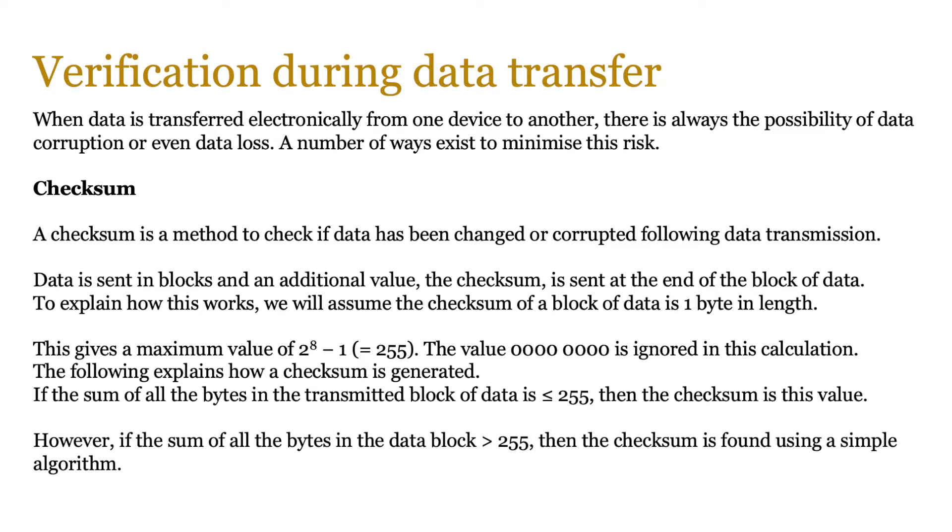A checksum is a method to check if data has been changed or corrupted following data transmission. Data is sent in blocks, and an additional value, the checksum, is sent at the end of the block of data.